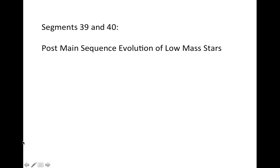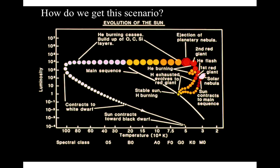Segments 39 and 40, Post-Main Sequence Evolution of Low-Mass Stars. This diagram shows the evolution of stars as they leave the main sequence to become red giants and then eventually white dwarfs. But how is this scenario put together? How do we understand how stars do this?